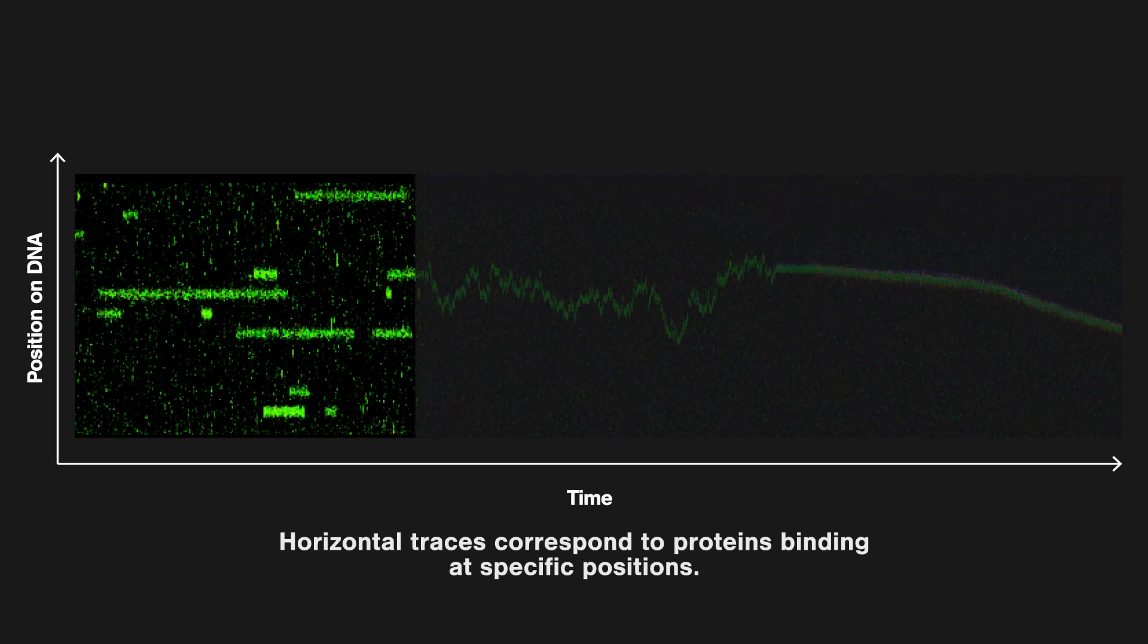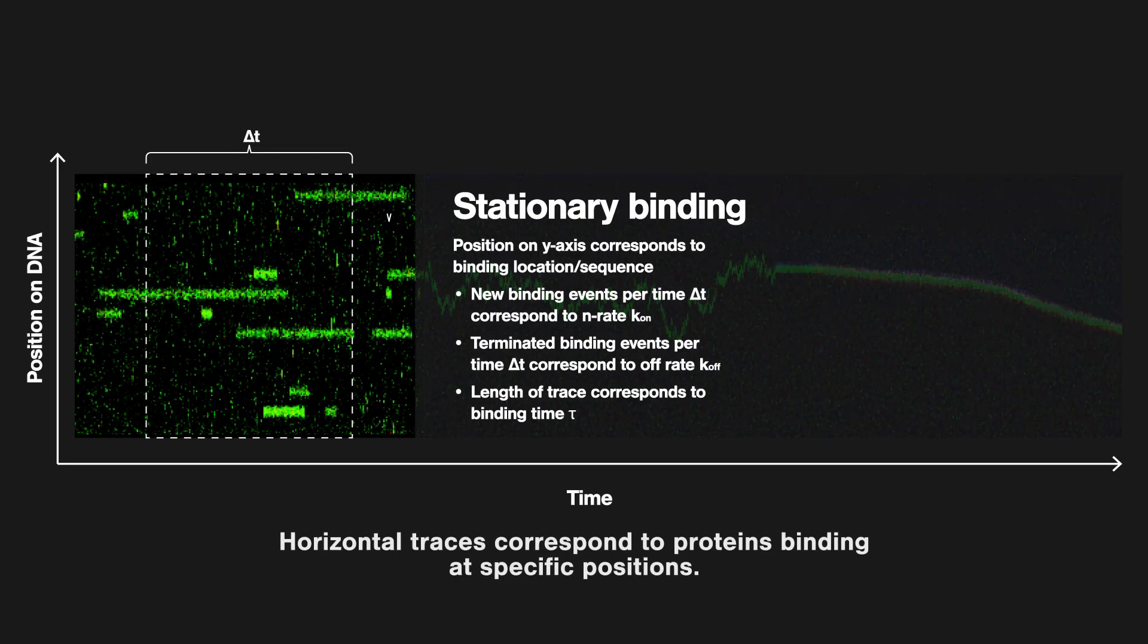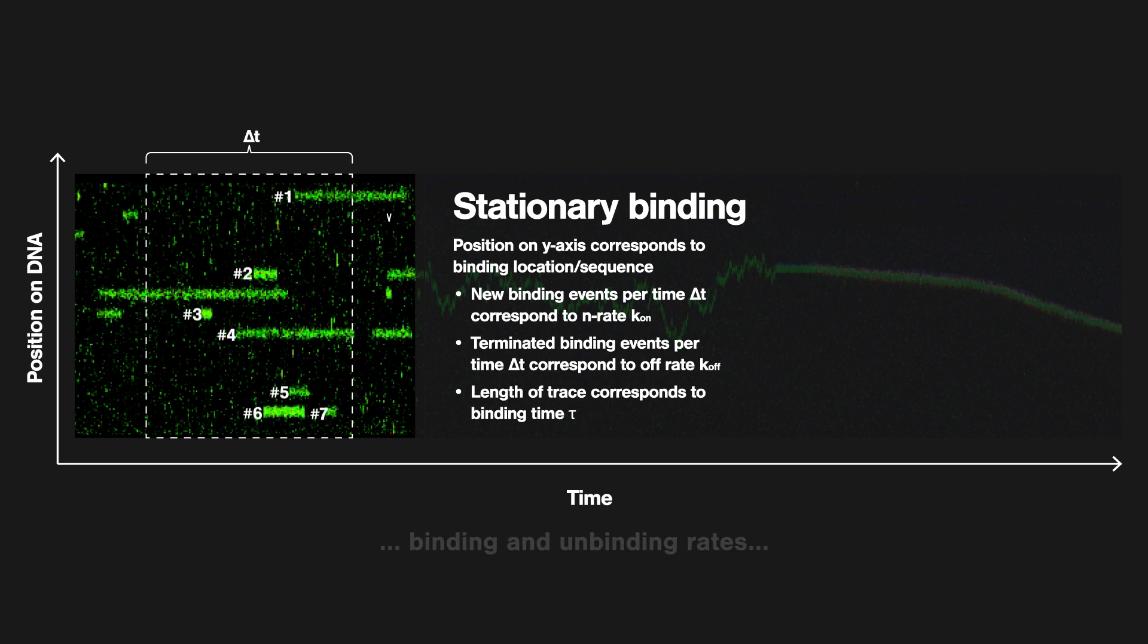Horizontal traces correspond to proteins binding at specific positions. We can derive the binding location or sequence, binding and unbinding rates, as well as the duration of the interaction.